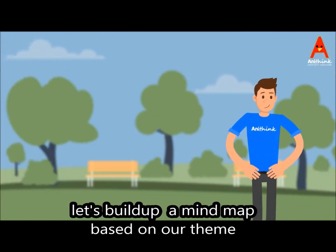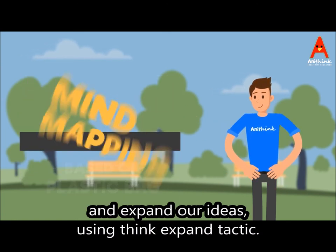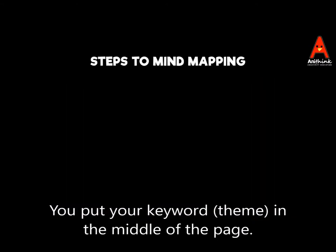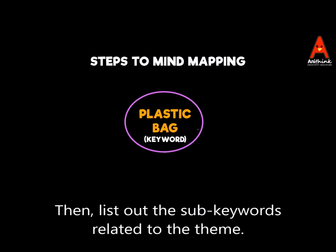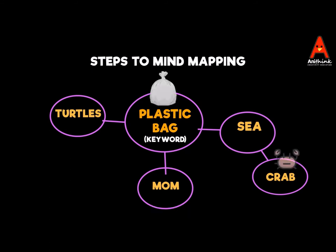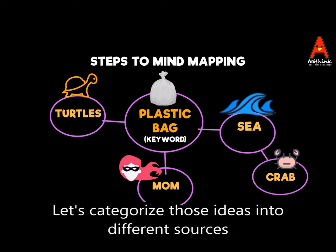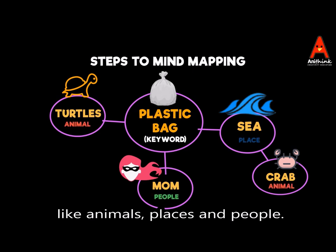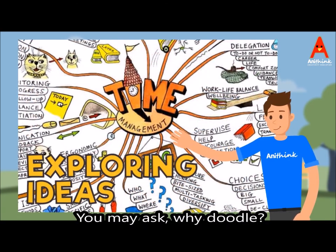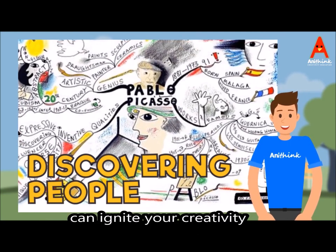Now that we've set our theme, let's build up a mind map to expand our ideas using the Think Expand tactic. Mind mapping is simple. You start by putting your keyword in the middle of the page, then list sub-keywords related to the theme. Next, draw and color a doodle for each keyword. Now we have our mind map, but it may be a bit messy. Let's categorize those ideas into different sources like animal, place, and people. Word plus picture plus color in a mind map can ignite your creativity.